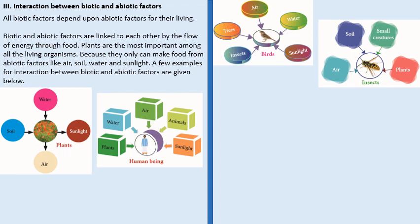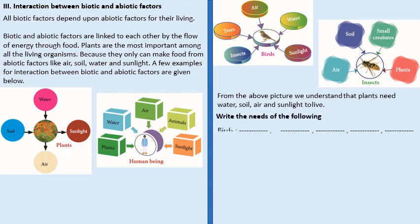Here are some examples of interaction between abiotic and biotic factors. Plants are biotic factors and they use water, sunlight, soil and air, which are abiotic factors. Human beings are biotic factors and they use plants, water, air, animals and sunlight. Birds also use both trees, air, water, sunlight and insects — both biotic and abiotic factors. Insects also use soil, air, small creatures and plants — both biotic and abiotic factors for their living.